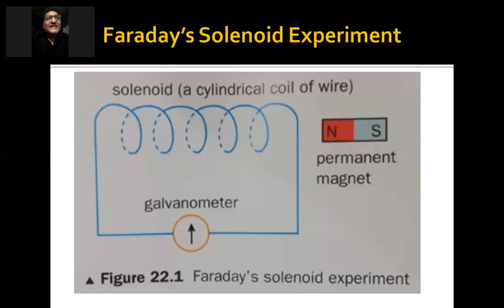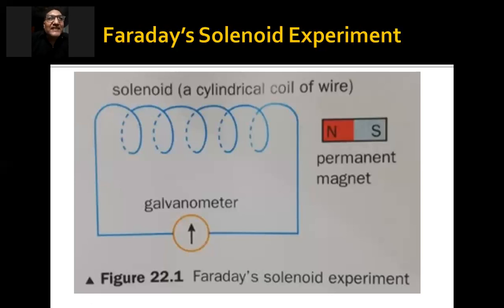They had a solenoid connected with a galvanometer. Because there was no source of electricity — no power supply, no cells, no battery connected — there was obviously no electricity in the solenoid. So the galvanometer pointer remained stationary in the center, indicating no current.